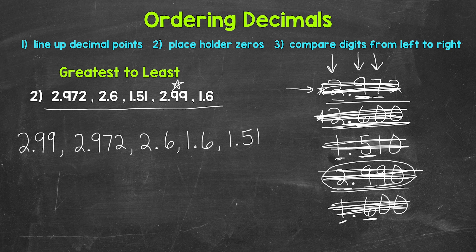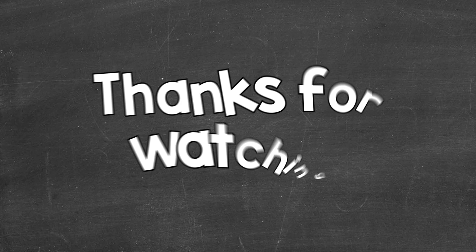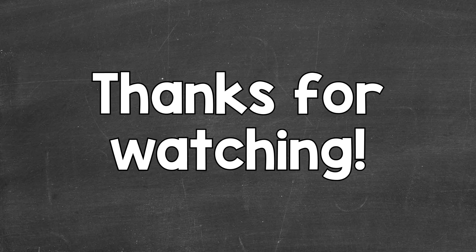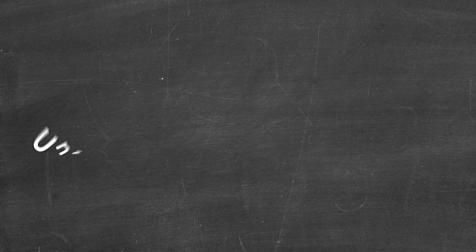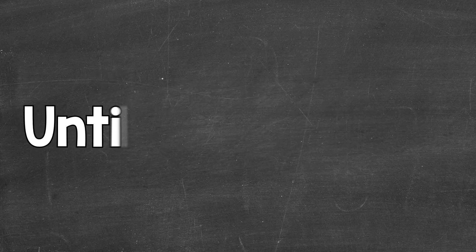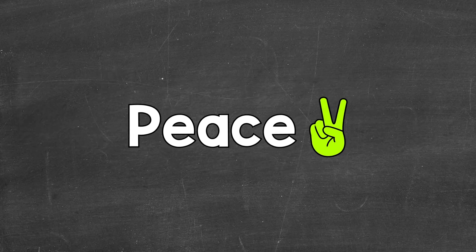So there you have it — that's how to order decimals. Just remember: line up the decimal points, use placeholder zeros, and then compare digits from left to right. I hope that helped. Thanks so much for watching. Until next time, peace.